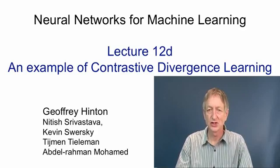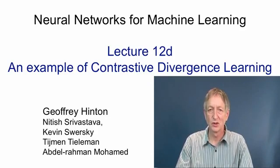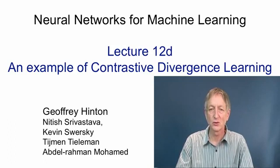In this video, I'm going to show a simple example of a restricted Boltzmann machine learning a model of images of handwritten twos. After it's learned the model, we'll look at how good it is at reconstructing twos and we'll look at what happens if we give it a different kind of digit and ask it to reconstruct that. We'll also look at the weights we get if we train a restricted Boltzmann machine that's considerably larger on all of the digit classes.